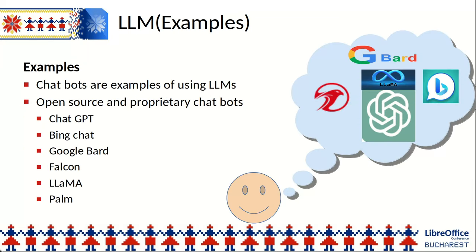Examples. Chatbots are examples of LLMs. They have open-source and proprietary samples. Currently, maybe the most well-known is the product of OpenAI company called ChatGPT. But there are other samples like BingChat, Google Bard, Falcon, LLaMA, and PaLM, created by other companies.